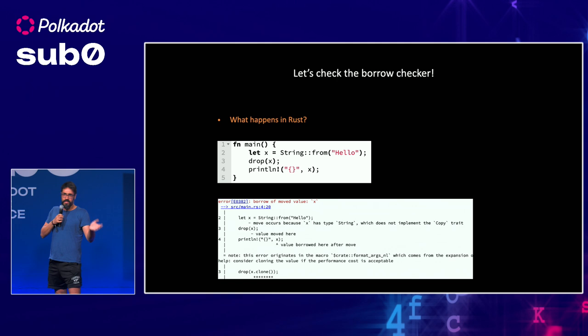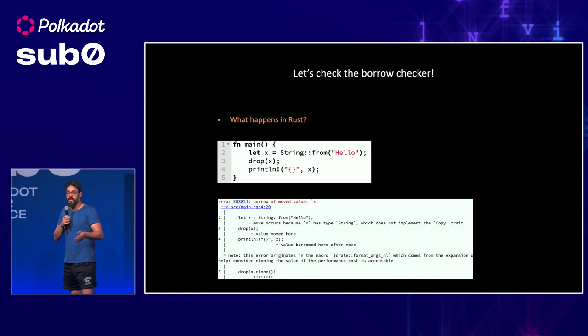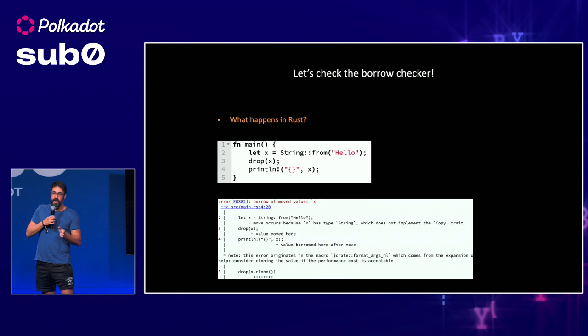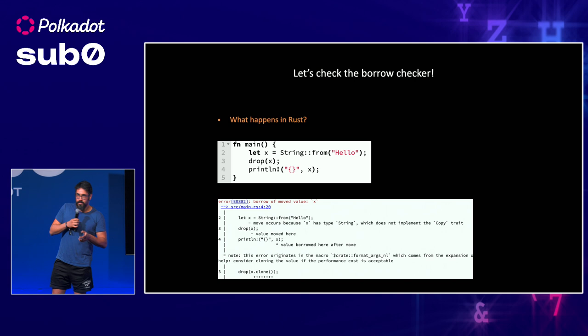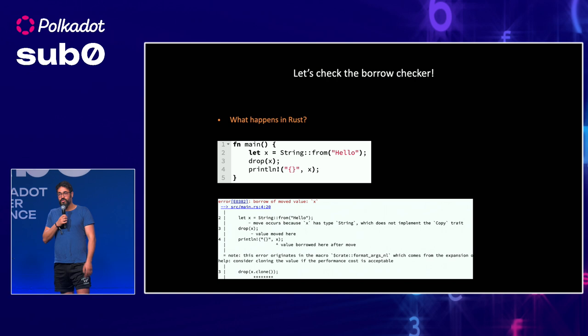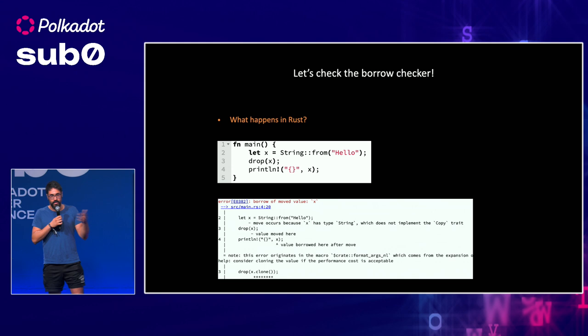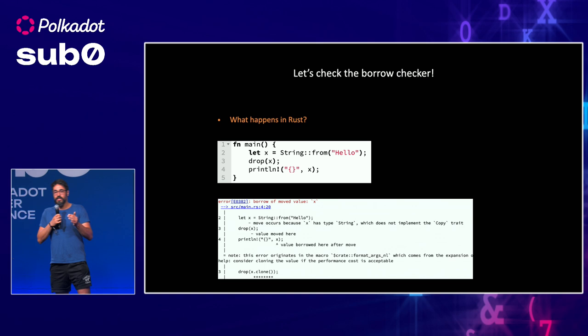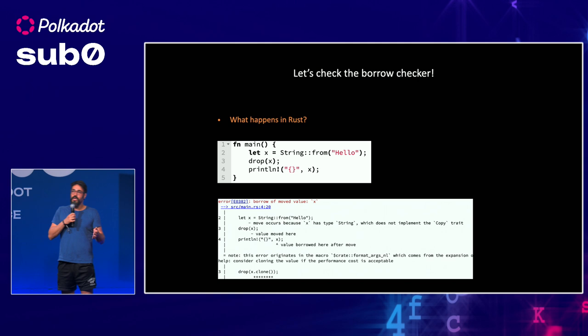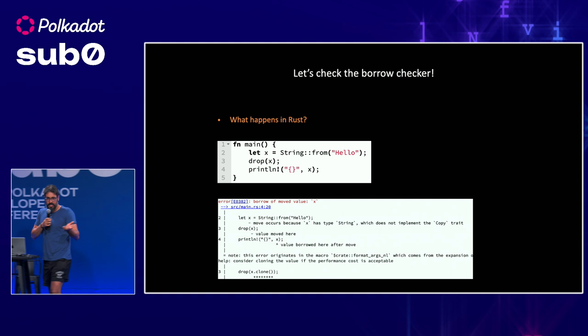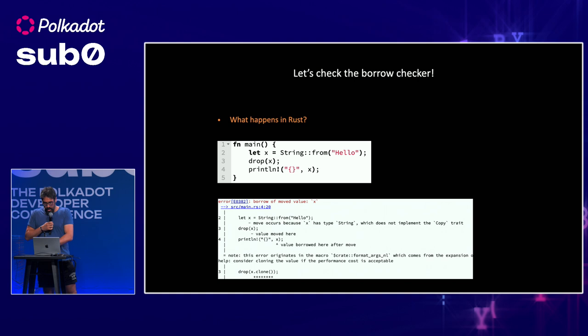Here is the equivalent conversion of that code in Rust. If you try to compile it, the borrow checker catches us at line 4 and stops the compilation process. At line 2 we declare X and assign it the string object 'hello', then at line 3 we drop that — we give away ownership. At line 4 we try to print the content. The borrow checker determines that X is no longer valid and says it cannot compile your code. This example shows how the borrow checker tries to make and produce secure code for us.